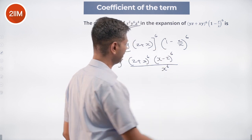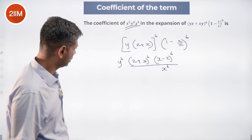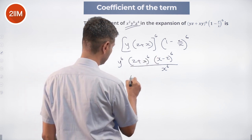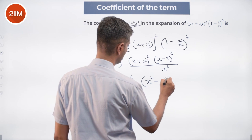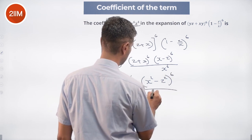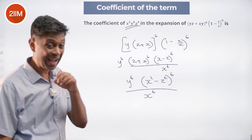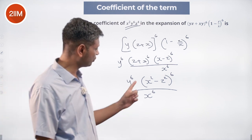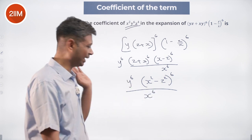Simplifying this as x minus z by z. So, x plus z into x minus z. This is y power 6 into x square minus z square whole power 6 by x power 6. In this expansion, every term we can think of as a combination of x square and z with the y power 6 hanging in there.